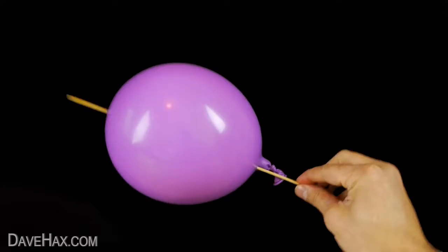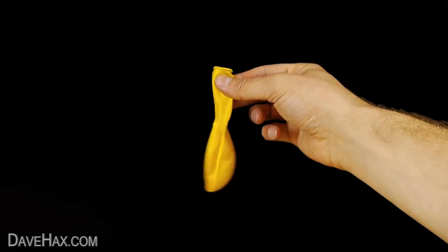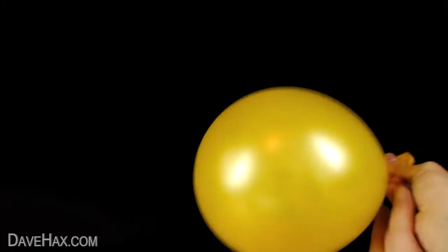Today I'm going to show you a really cool trick of how to thread a balloon onto a skewer. Start by taking a balloon, inflate it with air and tie a knot in it.